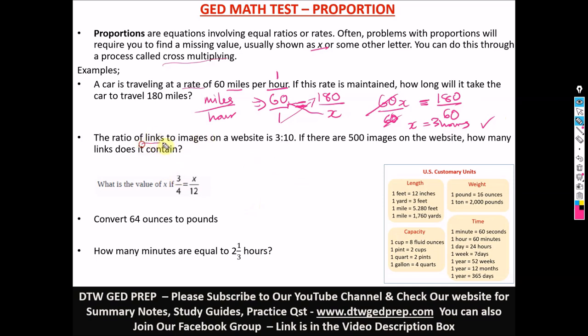We're going to do another example again. So this says a ratio of links to images. So the ratio is what? Links to images. So first, the first thing is getting your ratio right. Getting your ratio right. So links to images on a website is 3 to 10. 3 ratio 10 means 3 over 10. Now it says if there are 500 images on the website, how many links does it contain?